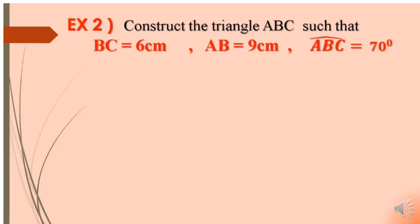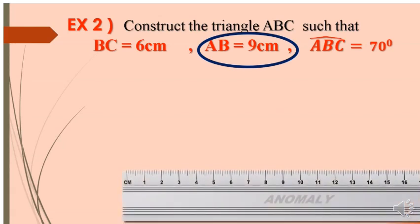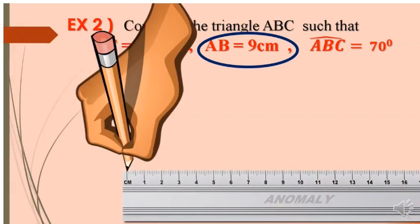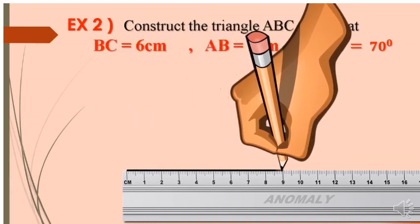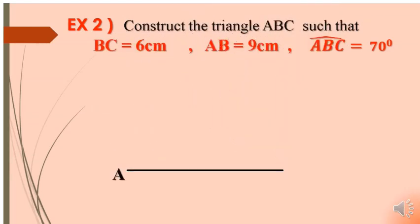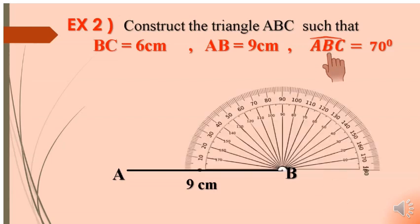So, in this case, we draw AB of measure 9 cm. Then, we have to draw angle ABC at vertex B.